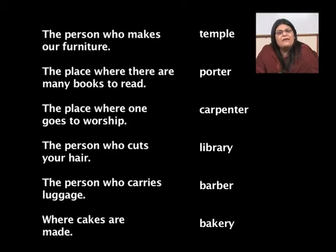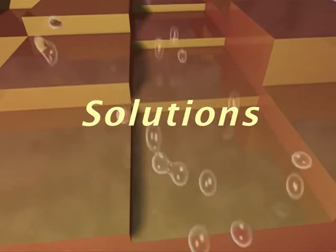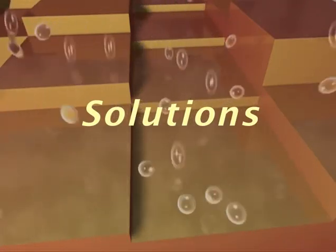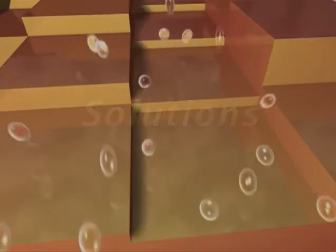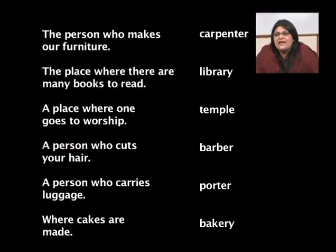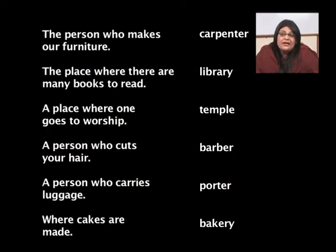Please match the columns and we'll discuss the solutions. The person who makes our furniture — Carpenter. The place where there are books to read — Library. A place where one goes to worship — Temple. A person who cuts your hair — Barber. A person who carries luggage — Porter. And where cakes are made — Bakery.